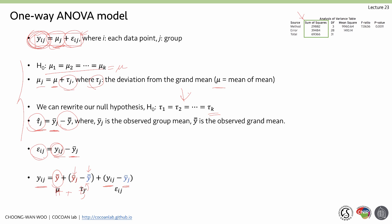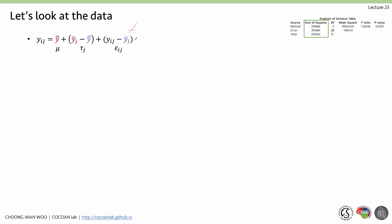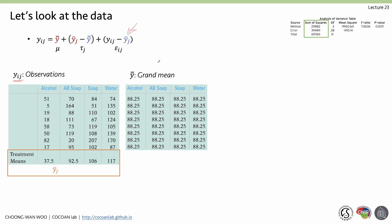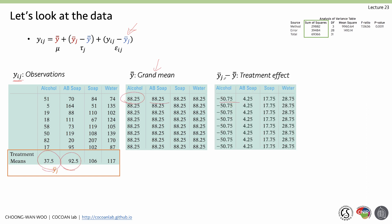We deconstruct yᵢⱼ as: grand mean μ + treatment effect τⱼ + residual εᵢⱼ. Using the actual data: the grand mean of all observations is 88.25. We calculate the difference between each group mean and the grand mean — for example, 37.5 − 88.25 = −50.75. These treatment effects and residuals are computed for every observation.